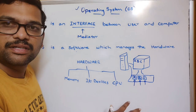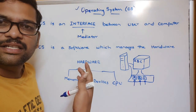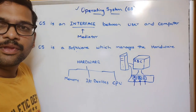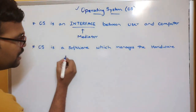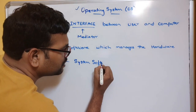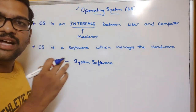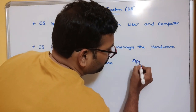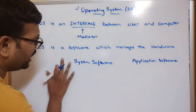We interact with the system using input devices like a keyboard or mouse, and we get output from output devices. There must be one interface between these things — whatever instructions we give and what the system understands is all handled by the operating system. The operating system is a system software, which is software that manages the hardware.